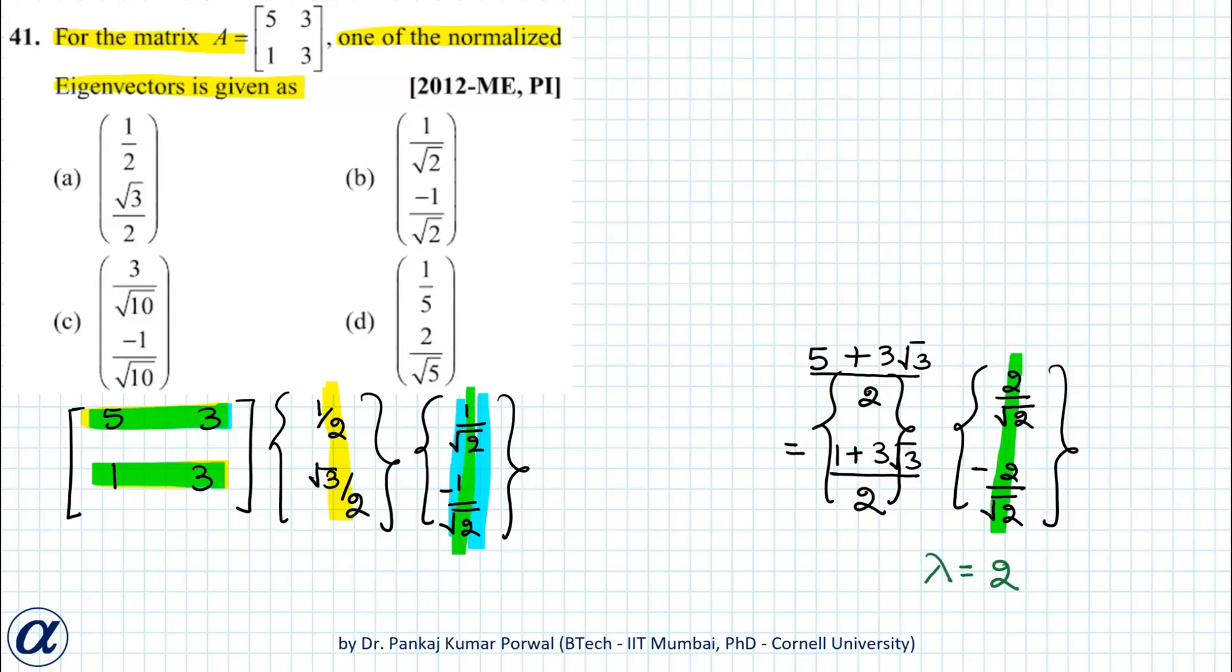So here the answer B is correct. And also note, here it says normalized eigenvector, that is not important here, but normalized just means that we have converted the eigenvectors into unit vectors. So all these vectors are unit vectors.